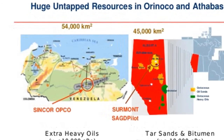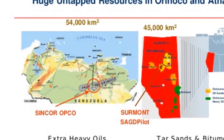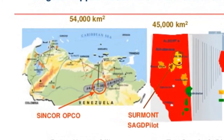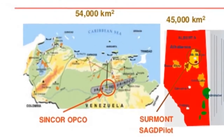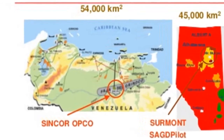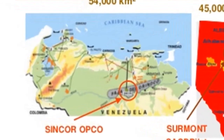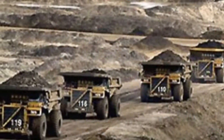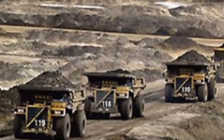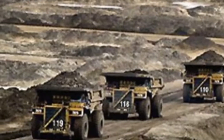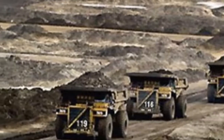Currently, oil sands are mined at the surface in a manner similar to the strip mining of coal. The excavated material is then heated with pressurized steam until the bitumen softens and rises. Once collected, the oily material is treated to remove impurities, and then hydrogen is added. This last step upgrades the material to a synthetic crude, which can then be refined.